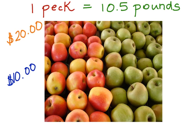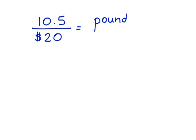Let's write a proportion and see if we can figure this out. We know that one peck, which is 10.5 pounds, costs the Smith family $20. That's our ratio. We're comparing pounds to dollars. And this is also constant. It's not going to change.